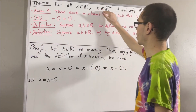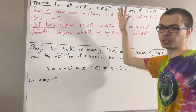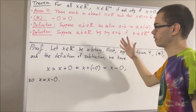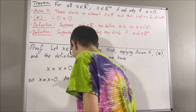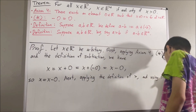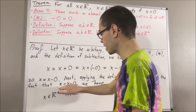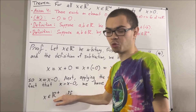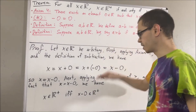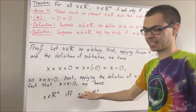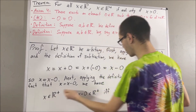Now remember, the whole goal is to show that x is a positive real number if and only if x is greater than 0, and we're going to establish this through a chain of if and only ifs using the fact that x is equal to x minus 0 and the definition of greater than. Since x is equal to x minus 0, to say that x is a positive real number is equivalent to saying x minus 0 is a positive real number. But by definition of greater than, to say that x minus 0 is a positive real number is equivalent to saying x is greater than 0. So through this chain of if and only ifs, we see that x is a positive real number if and only if x is greater than 0.